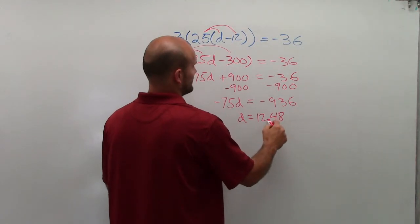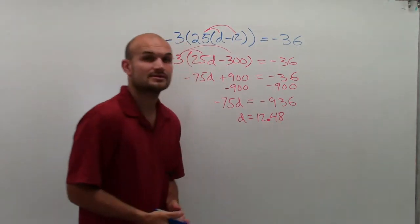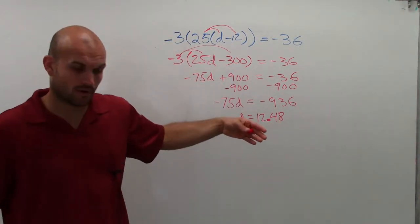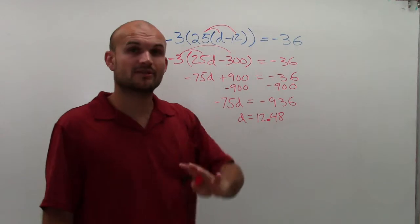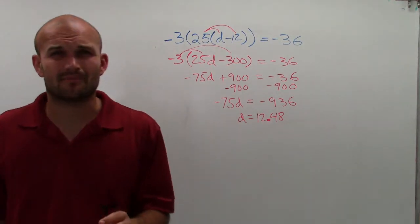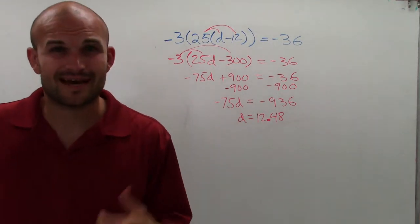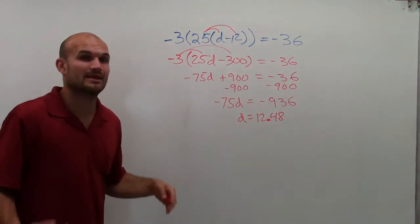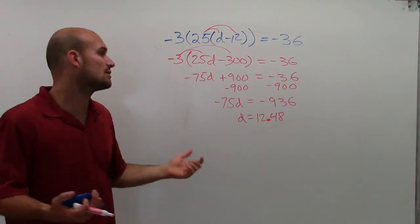That's 12.48, not 12.58. All right, so that's perfectly fine. That's what I've taught you before, and there's nothing wrong with that. However, I'm going to show you a different way that we can use with distributive property. You don't always have to do the distributive property to simplify.